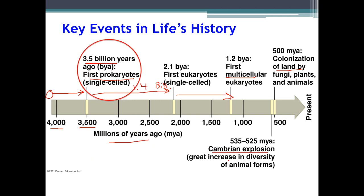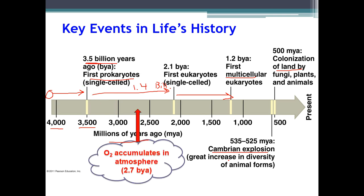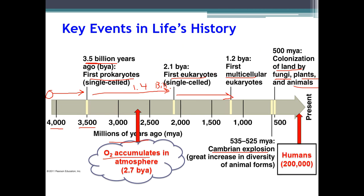Now that we have these prokaryotes 3.5 billion years ago, they are starting to synthesize their own stuff. They need to do chemical reactions in order to survive, and one of those chemical reactions results in oxygen. So slowly over time — about 2.7 billion years ago — we see that oxygen has started to accumulate in the atmosphere. And that's one of the reasons why eukaryotes were able to really be successful, especially the eukaryotes that we know of now like fungi, plants, and animals. Those are only possible as-is because of the oxygen made available by those prokaryotes. Humans have only been around for about 200,000 years — we haven't been around very long.